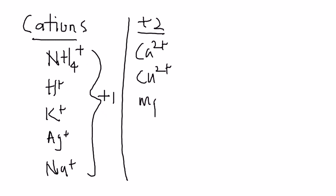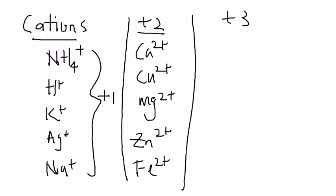We have zinc 2+ and iron 2+. These are the common ones. Last one is cations that have positive three.